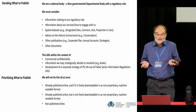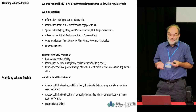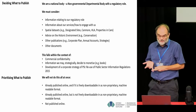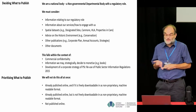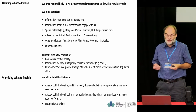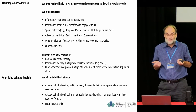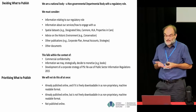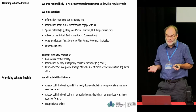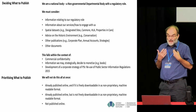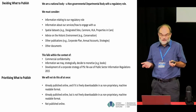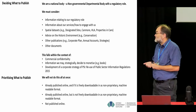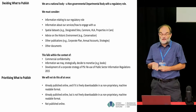As an organisation, we need to consider what information we have — information relating to our regulatory role, our archival role, information about our services, and how to engage with us. We already make a lot of information available online: Canmore, designated data sets, historic land use assessment, mapping, our properties in care. We also provide information about the historic environment, and we have lots of other corporate publications — the corporate plan, annual accounts, strategies.